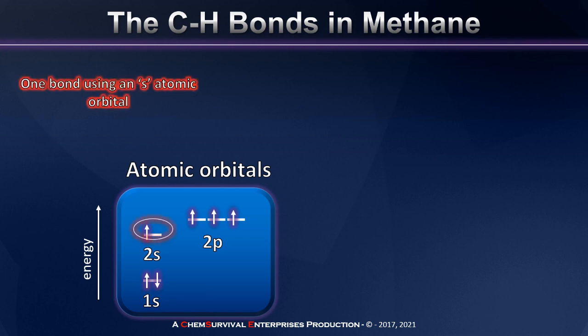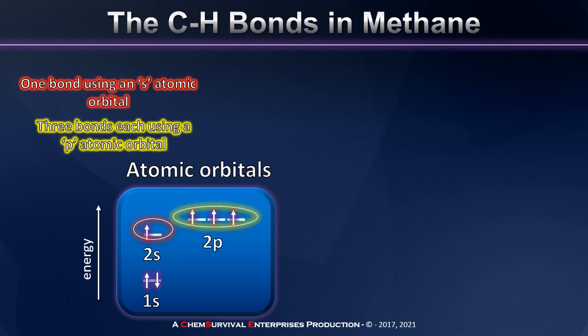However, consider this: this particular carbon atom would make one bond to a hydrogen using its s-atomic orbital and then three bonds to hydrogens using its p-atomic orbitals. This model predicts that methane should have three identical carbon-hydrogen bonds and a fourth carbon-hydrogen bond that has a different length, strength, and angle to the others. And yet, we know from scientific observation that this is not true.